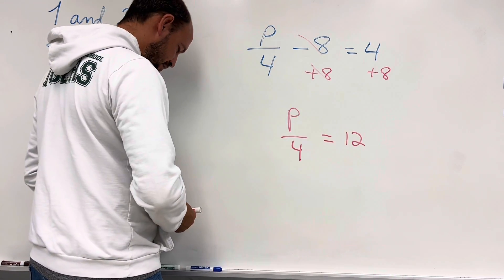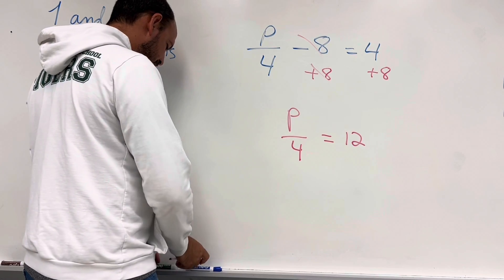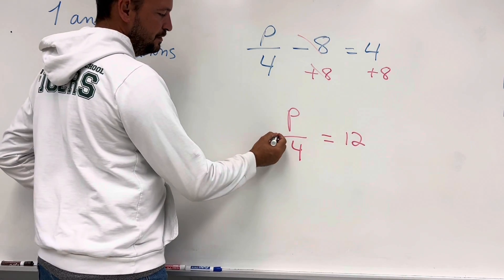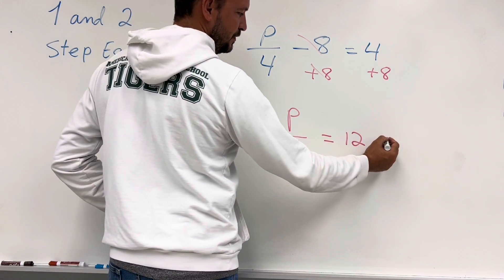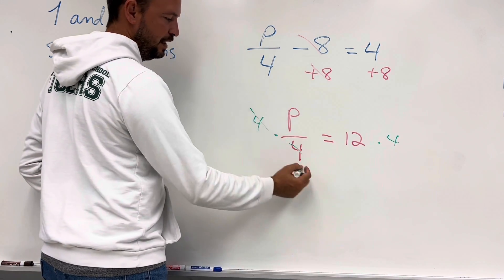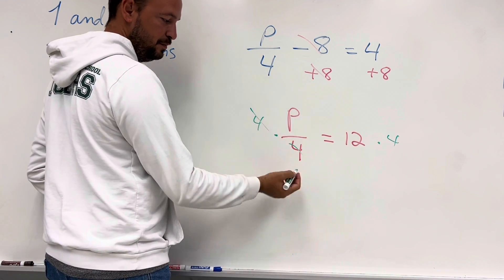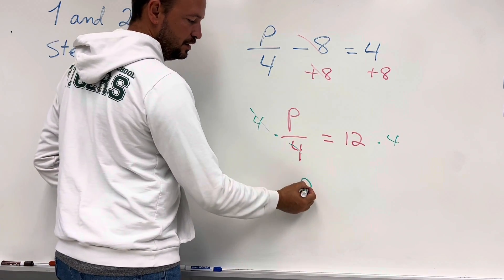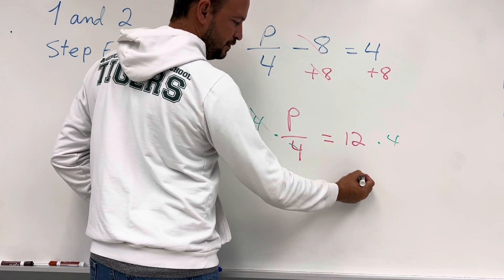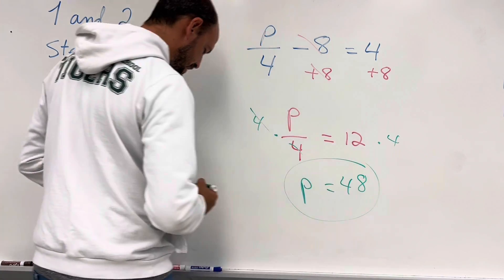That's the first step. Now for the next step, we multiply by 4 on both sides. We simplify — 1 times p is p — so p equals 48. That's the answer.